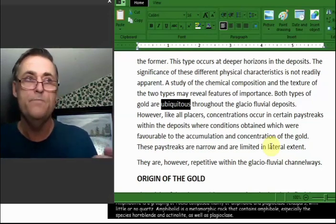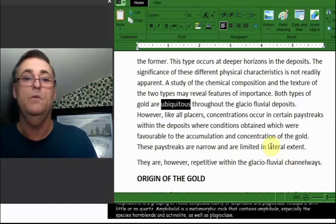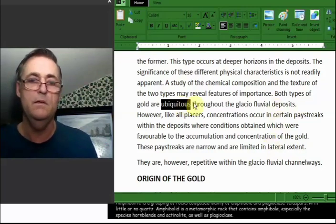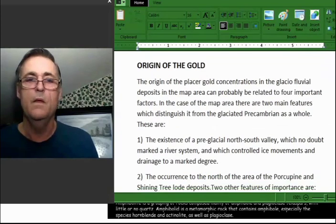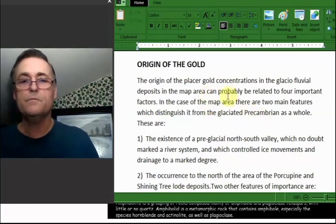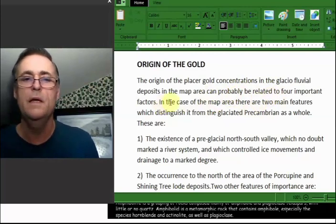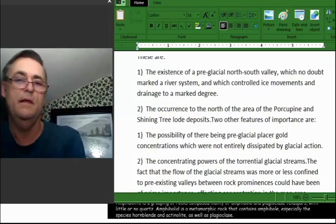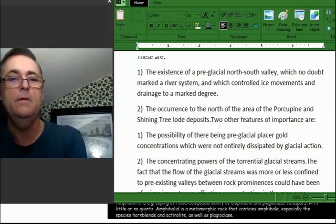The origin of the placer gold concentrations in its glacial fluvial deposits in the map area can probably be related to four important factors. In the case of the map area, there are two main features which distinguish it from glacial pre-Cambrian as a whole. There are the existence of pre-glacial north-south valley, which no doubt marked a river and which controlled ice movements and drainage to a marked degree.